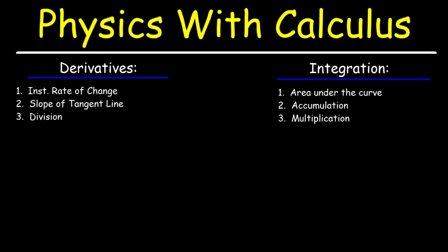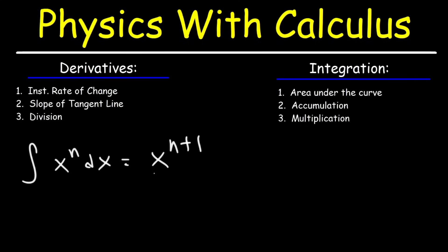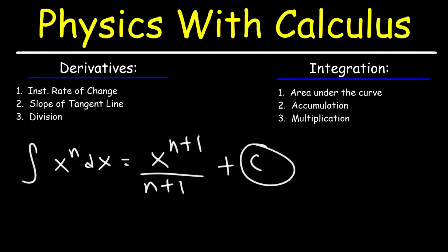Integration is basically the reverse. The indefinite integral of x to the n is going to be x to the n plus 1 divided by n plus 1, plus the constant of integration. Anytime you differentiate a constant you get 0, so when you integrate, you introduce a constant.